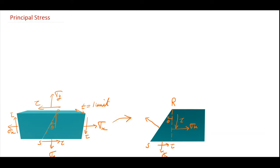On this plane RS there will be two stresses mutually perpendicular: the normal stress Sigma theta and the tangential stress Tau theta. By resolving all the forces on this triangular element and using the equations of equilibrium, I can find the relation for Sigma theta, the normal stress on plane RS, which is given by: 1/2 (Sigma X + Sigma Y) plus...